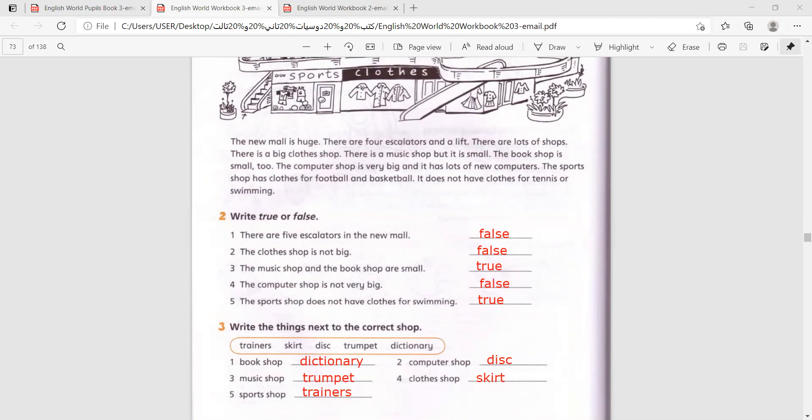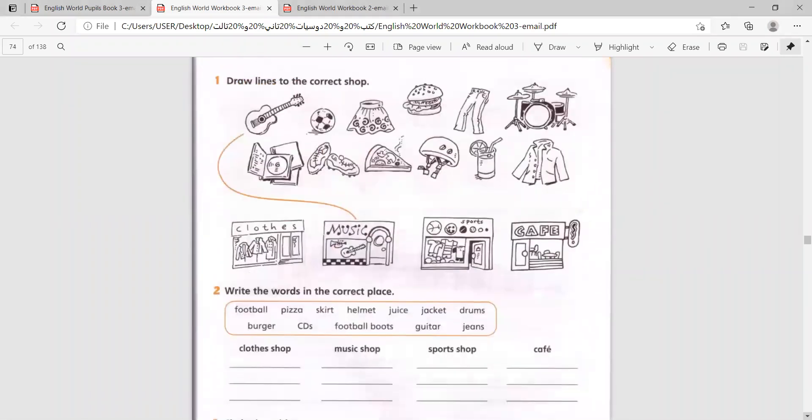So now, the next page, page 73, will be your homework. Your homework is this page. It's very easy. Draw lines to the correct shop and then write the words in the correct place. You have clothes shop, music shop, sports shop, and cafe.